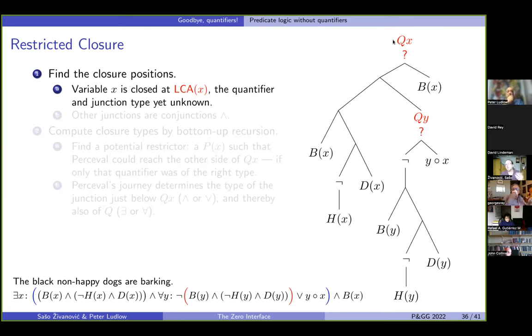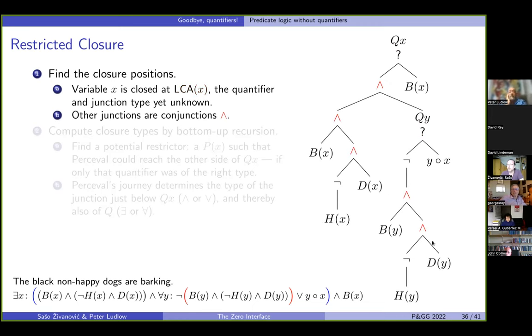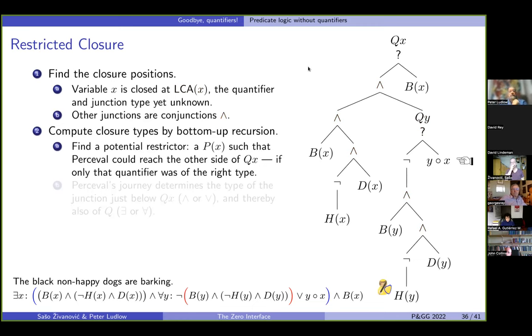The question mark, so the type of the quantifier is unknown as of yet, and so is the junction immediately below it. However, what we do know is that all other junctions are conjunctions. And then we will attack the types of the quantifiers by bottom-up recursion. So, we will start with the quantifier for y because it is embedded in the quantifier for x. And how do we do this? So, we will find a potential restrictor for the quantifier for y. So, this is an atomic formula such that Percival could possibly reach the top or to the other side if the question mark was resolved correctly.